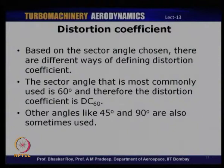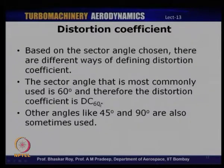DC60 is p02 average at the outlet minus p02 in a 60-degree sector where average total pressure is minimum, divided by half rho V-infinity squared. Similarly, you may have DC45 or DC90 or even DC135. DC60 is the most popularly adopted sector angle and is widely used. Other angles like 45 and 90 are sometimes used — the Russians typically use DC90, while in Europe and the US they usually take 60 degrees.